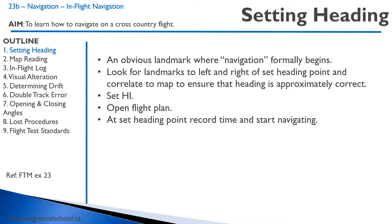As you approach the set heading point, you're going to do something called a departure angle check. You haven't quite reached the set heading point yet, but you see it ahead of you — let's say it's a prominent intersection of highways. You're going to look to the left and to the right, look at your map, and pick landmarks both to the left and to the right of your track. You do this just to make sure that your heading is approximately correct.